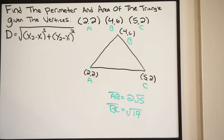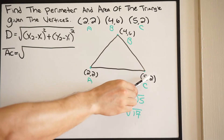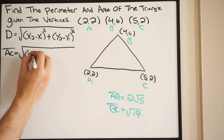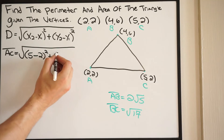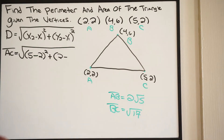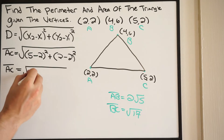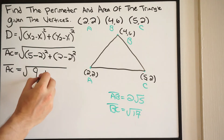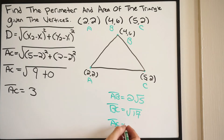Now let's do A to C. I'll call (2,2) x₁, y₁ and (5,2) x₂, y₂. Plugging in: √((5−2)² + (2−2)²) = √(9 + 0) = √9 = 3. So distance A to C is 3. We now have all three side lengths of the triangle.